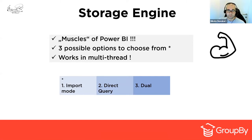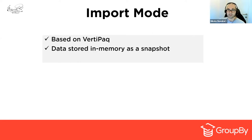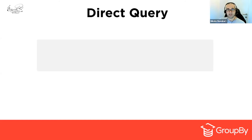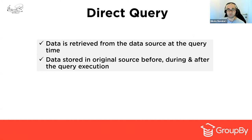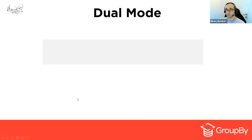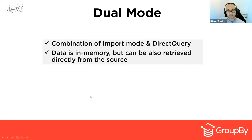Import mode is the most common way to store data when working with Power BI. Import mode is based on the VertiPaq engine — table data is stored in memory as a snapshot, and this snapshot can be periodically refreshed. When you use DirectQuery mode, data is retrieved from the data source at query time, and the key thing is that data is stored in its original source before, during, and after query execution — nothing is stored within Power BI itself. Dual mode represents a combination of the two: data from the table is loaded into memory, but at query time it can also be retrieved directly from the source.